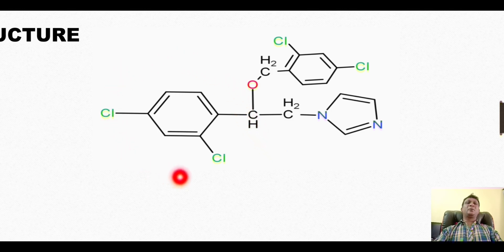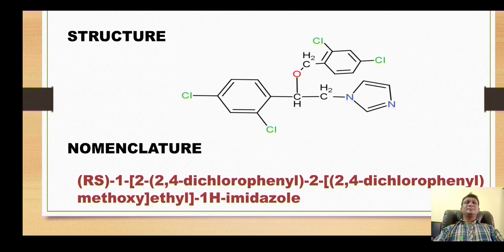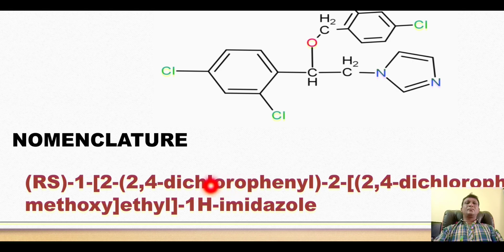On position number two, we have a substituent group called 2,4-dichlorophenyl. On position number two once again, we have a second substituent group called 2,4-dichlorophenyl methoxy, because here is a CH2 group along with oxygen, so it is called methoxy. That's why the IUPAC name of myconazole is ethyl imidazole substituted with various substituent groups.